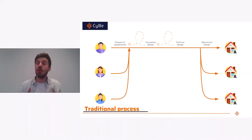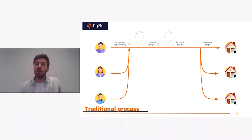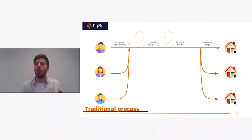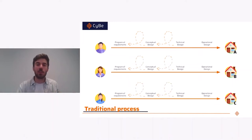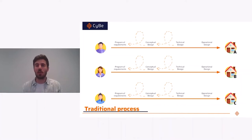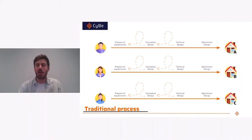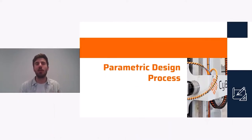Due to the linearity and dependency of each step on the previous one, any change at the beginning negatively affects the entire process. The inefficiency becomes even more evident with multiple clients. Either clients receive a fixed program of requirements — the same design process generates nearly identical houses, minimizing design work but risking client satisfaction — or each client gets a separate design process, meaning the workload increases directly with the number of clients. That's where parametric design comes in.